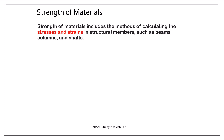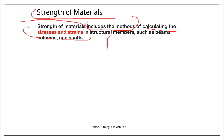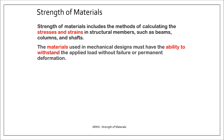What does a strength of materials course include? It includes methods of calculating the stresses and strains in engineering structural members such as beams, columns, and shafts. The materials used in these mechanical designs must have the ability to withstand the applied load without failure or permanent deformation.